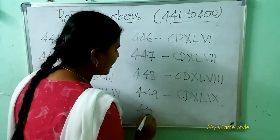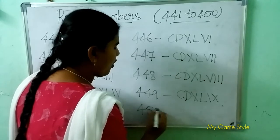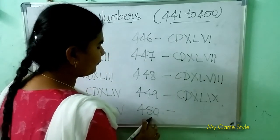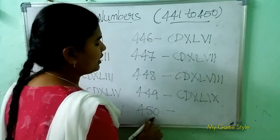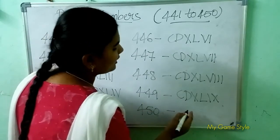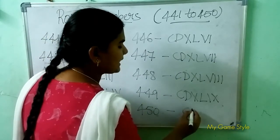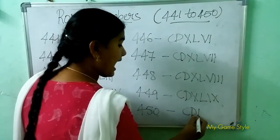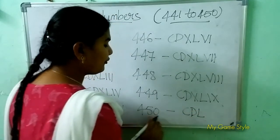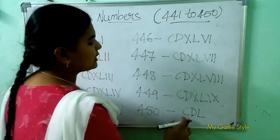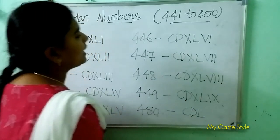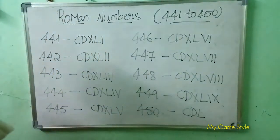Next, 450 — what is this? 450. So how to write here? CD is 400, L is 50. So this means 450.